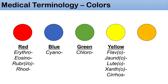The next color is orange, which is denoted by the prefix cirrhose. You can also use carotene — carotene is a chemical compound that has the color of orange, so sometimes we use carotene to describe the condition of appearing orange. As you can notice, the prefix cirrhose is used for both yellow and orange; it actually stands for a yellowish-orange type of color.